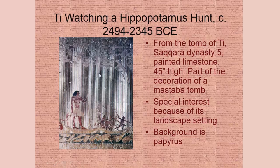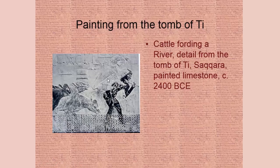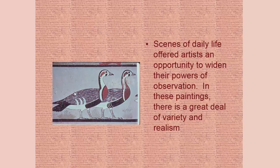One reason this image of Ti is important is its landscape setting — this is a new thing; we really haven't seen actual landscape set into imagery before the Egyptians. The background is all papyrus, which is sacred. Here's another painting from the tomb of Ti: cattle fording a river — look at how naturalistically the cattle are portrayed. These scenes of daily life offer artists an opportunity to widen their powers of observation, and the paintings are naturalistic, well preserved, and show the hand of the artist.